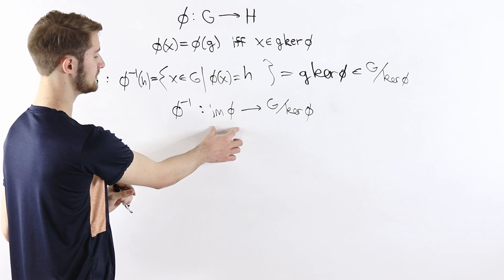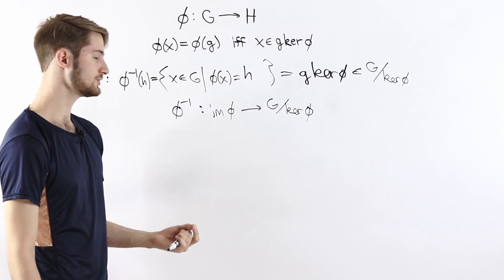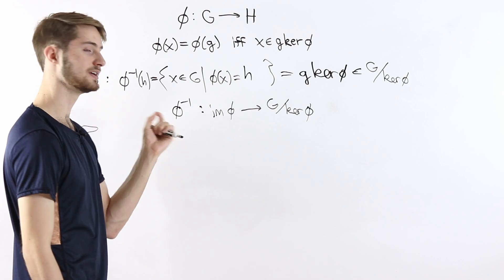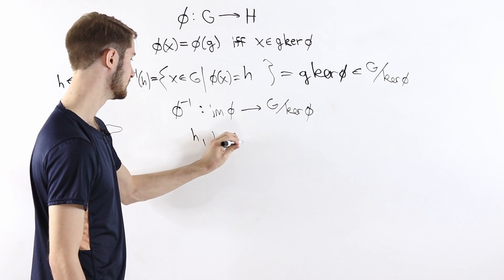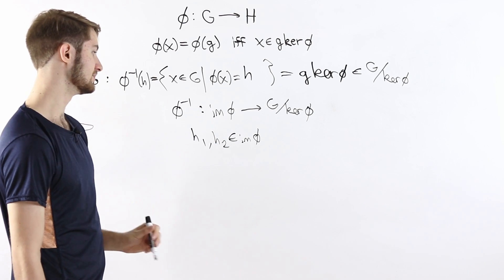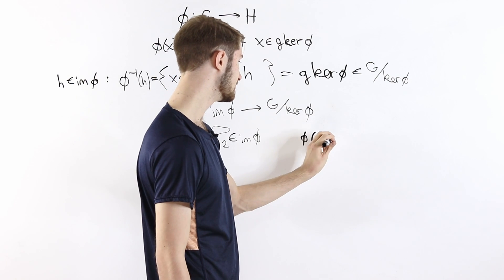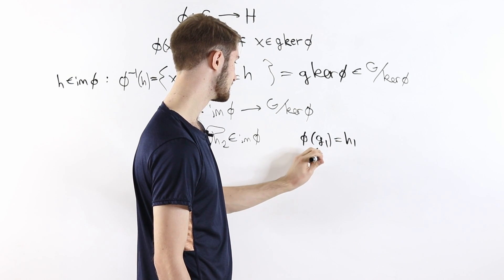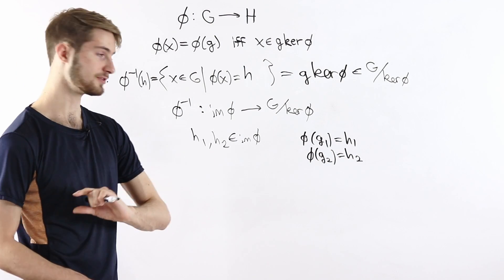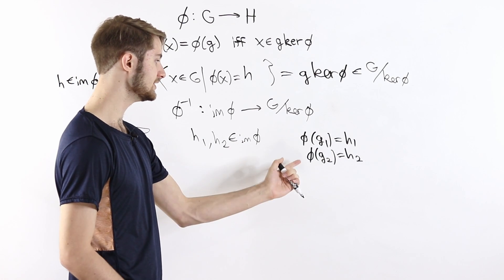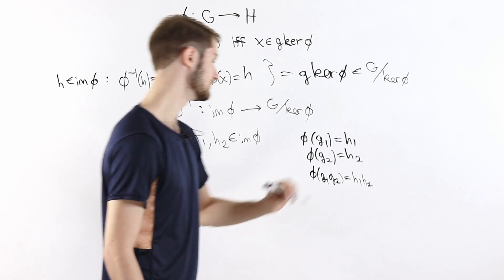The image of phi is a subgroup of H, and G mod kernel of phi is also a group — the quotient group. One question we might ask is: is phi inverse a group homomorphism? To check that, suppose we have two elements h1 and h2 in the image of phi. Since they're in the image, there exists some g1 with phi of g1 equals h1, and some g2 with phi of g2 equals h2. Because phi is a group homomorphism, phi of g1 times g2 equals h1 times h2.